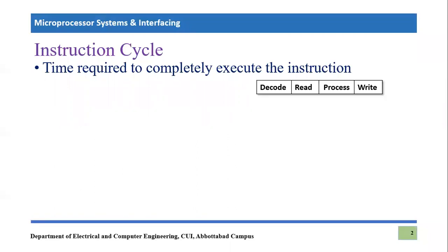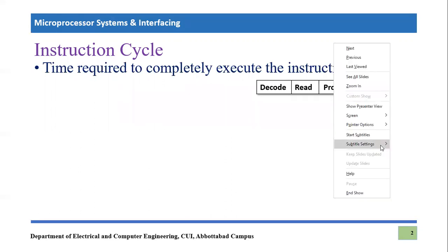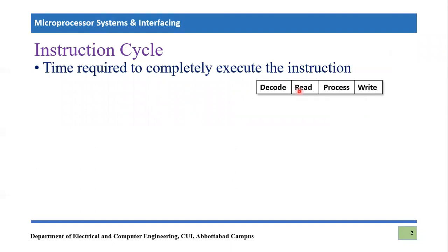Every single instruction execution includes these four basic steps: decode — meaning translation of assembly to machine code, or understanding what is supposed to happen; read — meaning to access the operands from memory or input device; process — meaning applying the specific operation on those retrieved operands; and write — meaning saving the result either in memory or the output device. These four steps are performed in single clock cycles, and that is why instruction frequency is one-fourth of the crystal oscillator frequency.